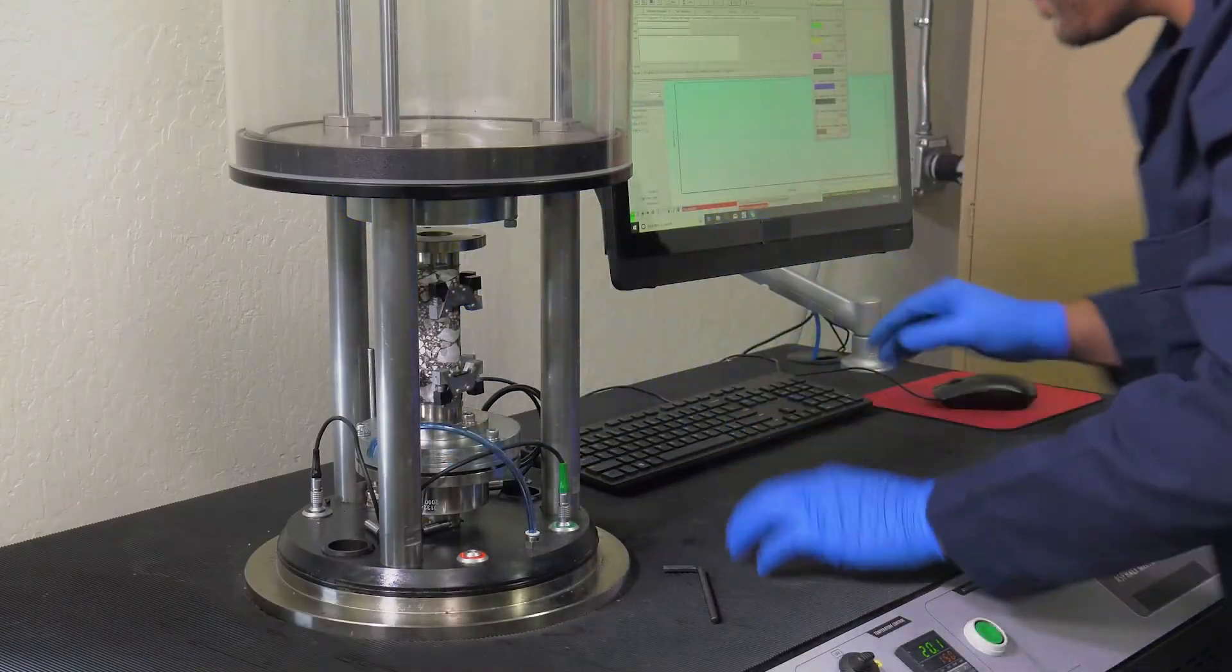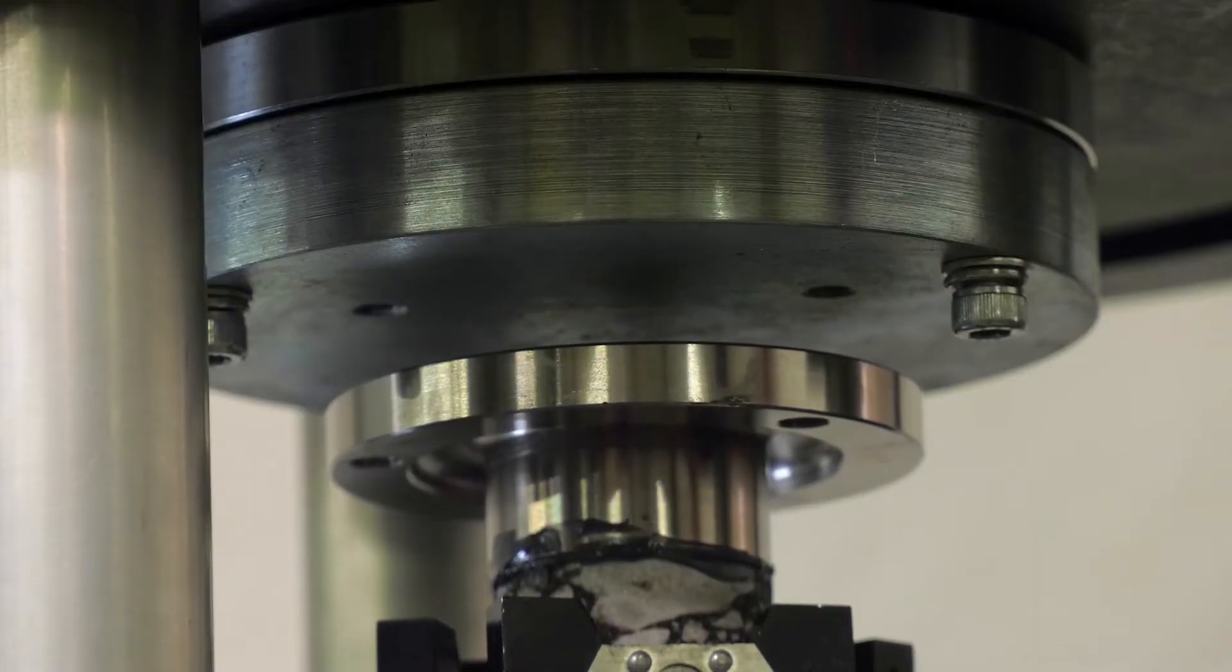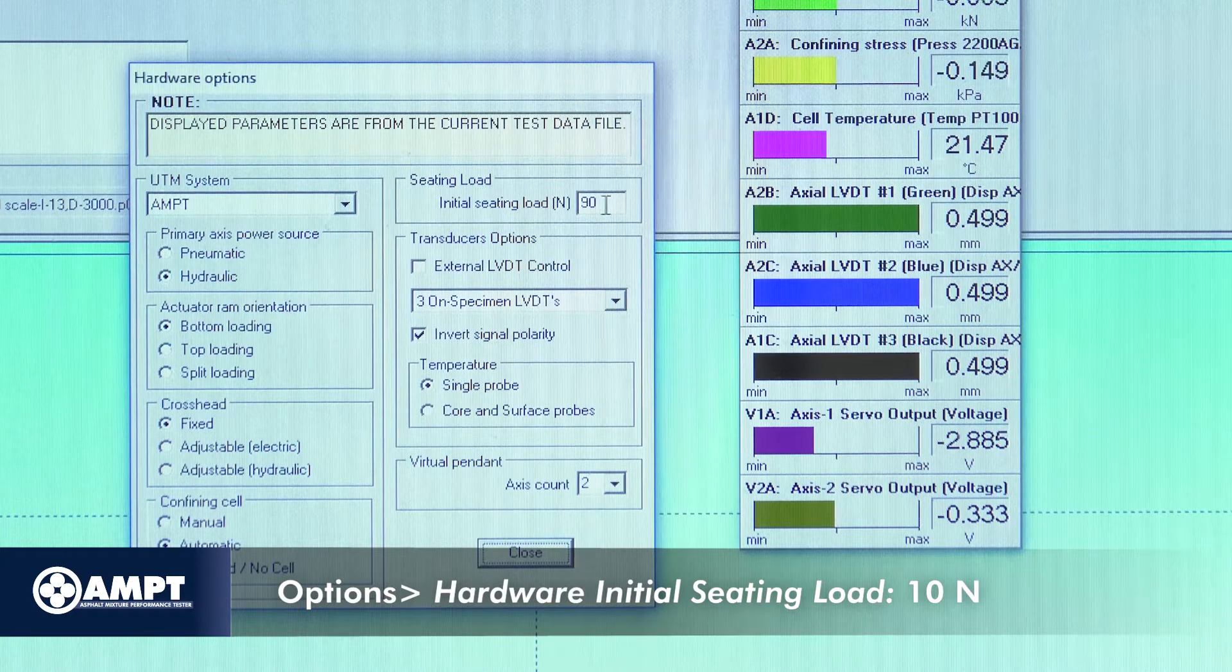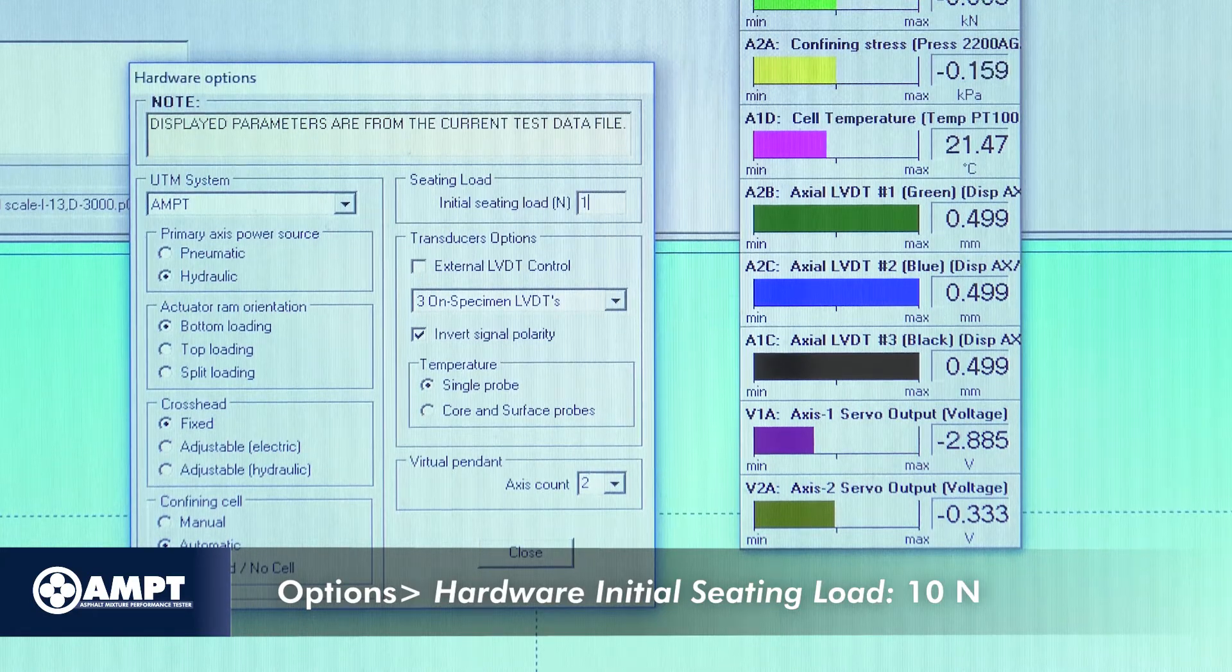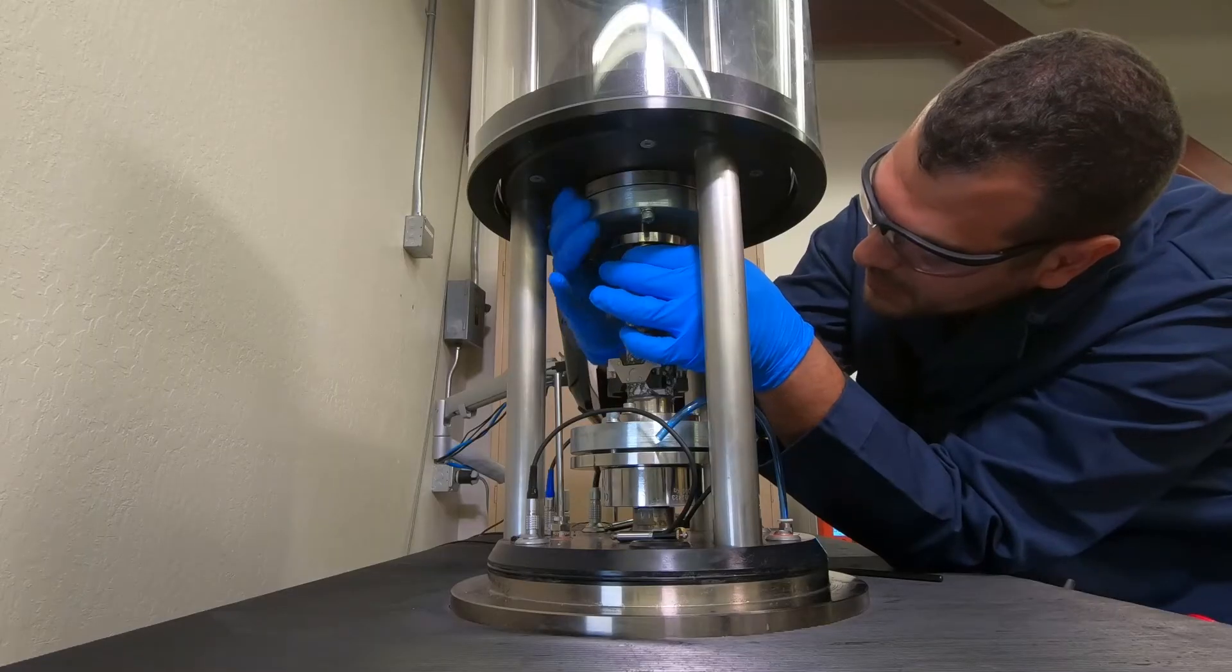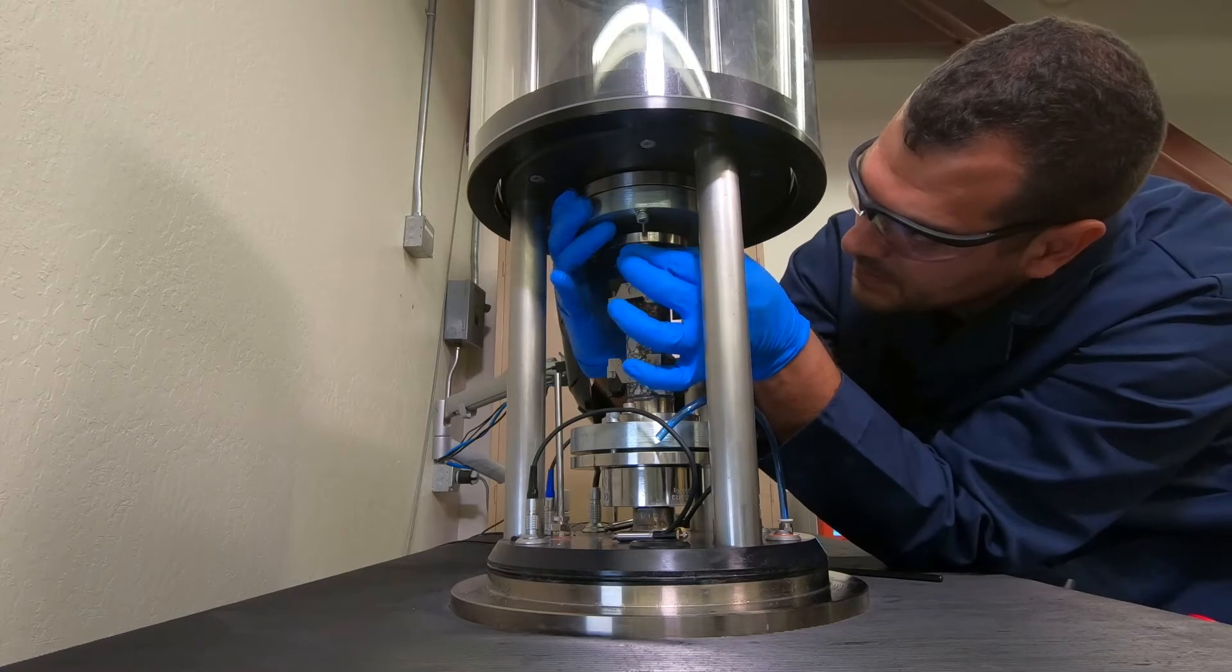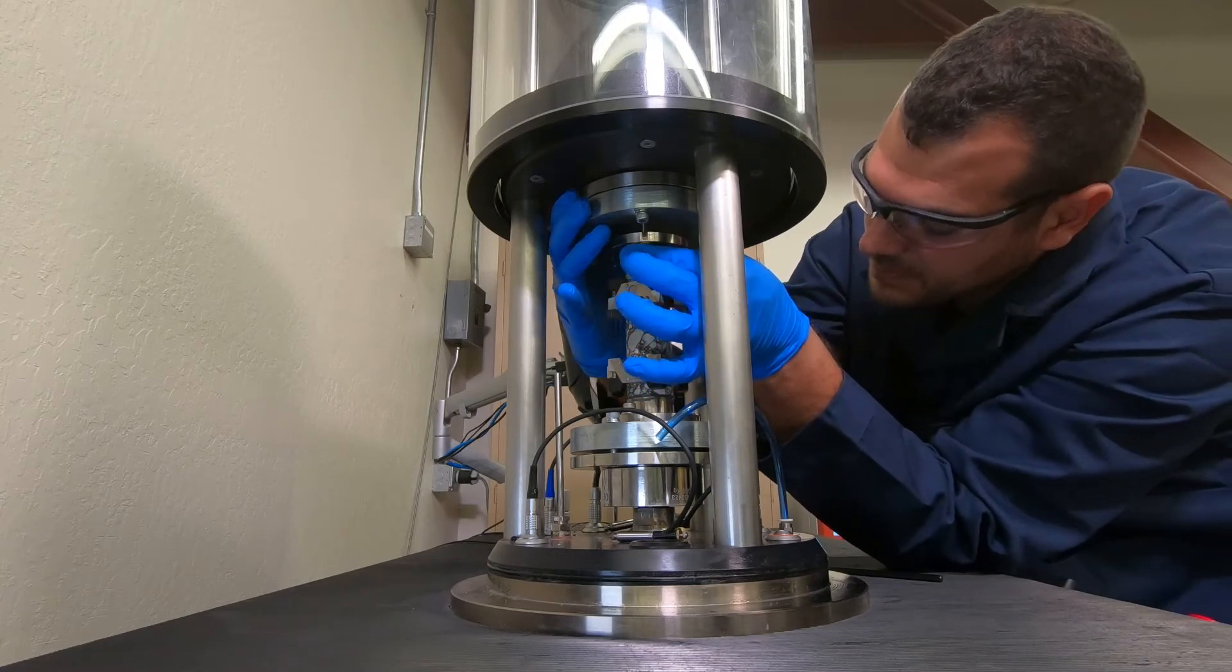Once the screws are tight, slowly raise the specimen. In the control software, make sure the initial seating load is set to 10 newtons, then raise the actuator. Align and attach the remaining screws and washers to the top platen. Verify alignment, but do not tighten the screws completely yet.